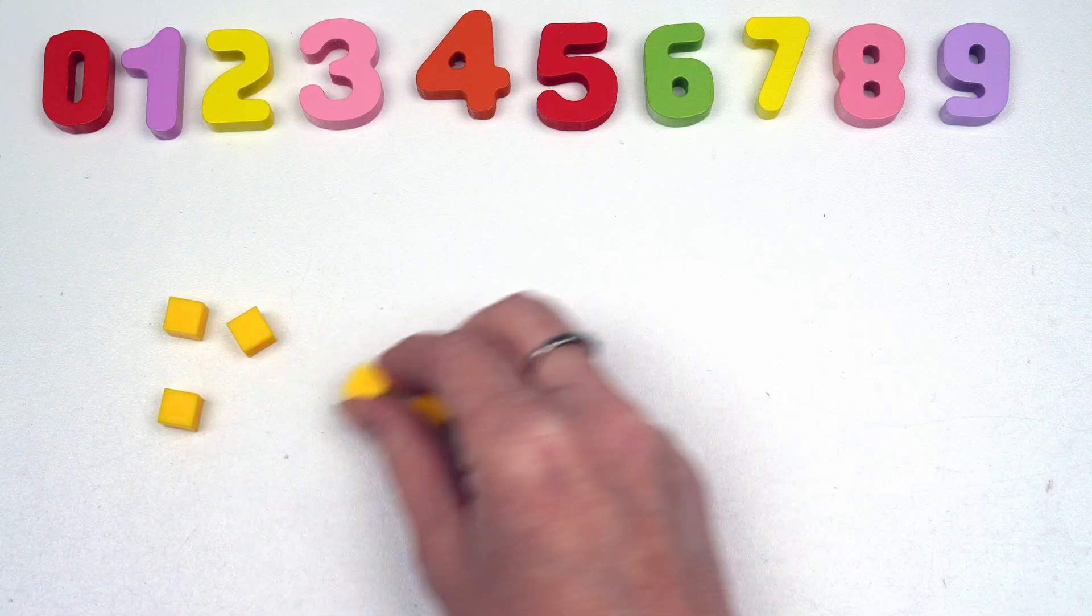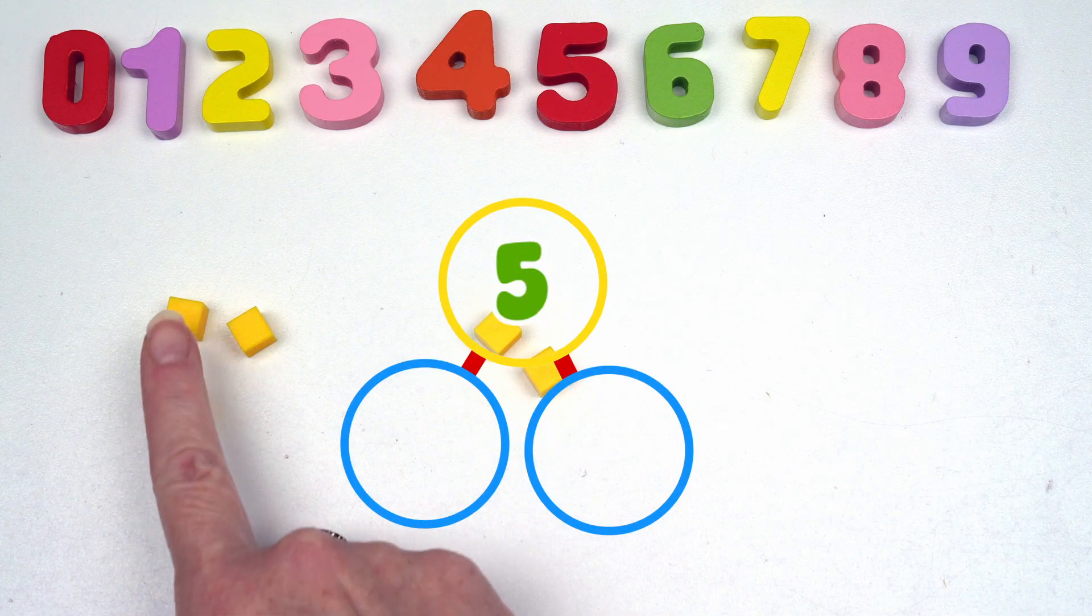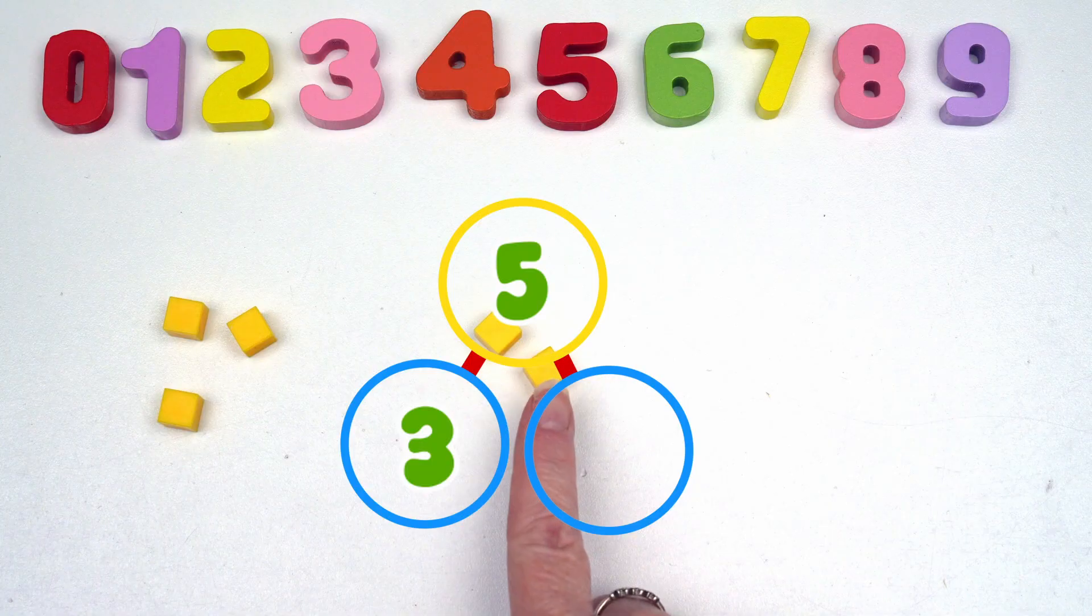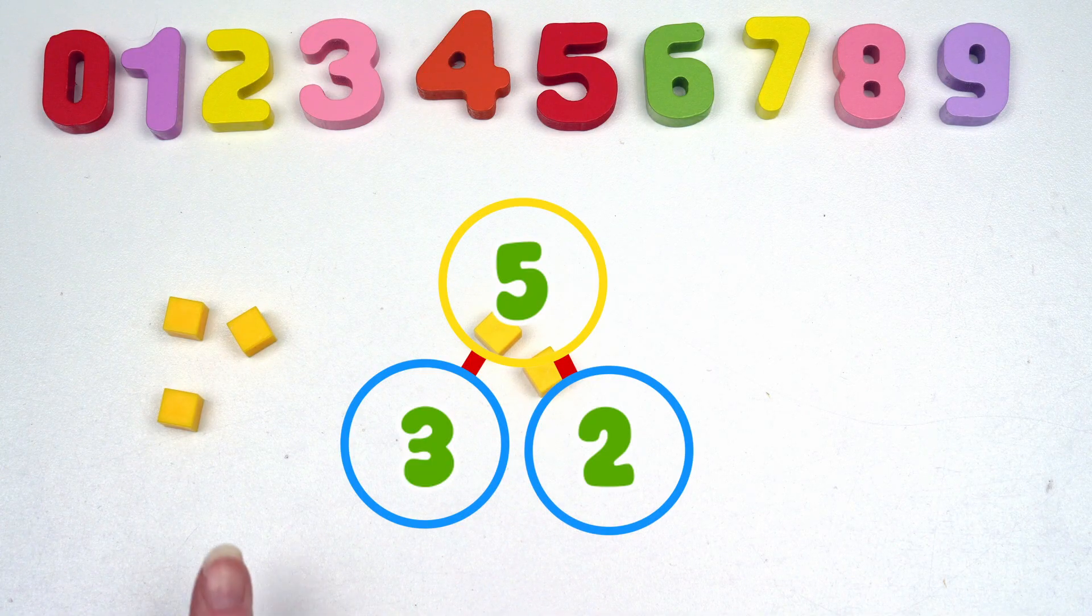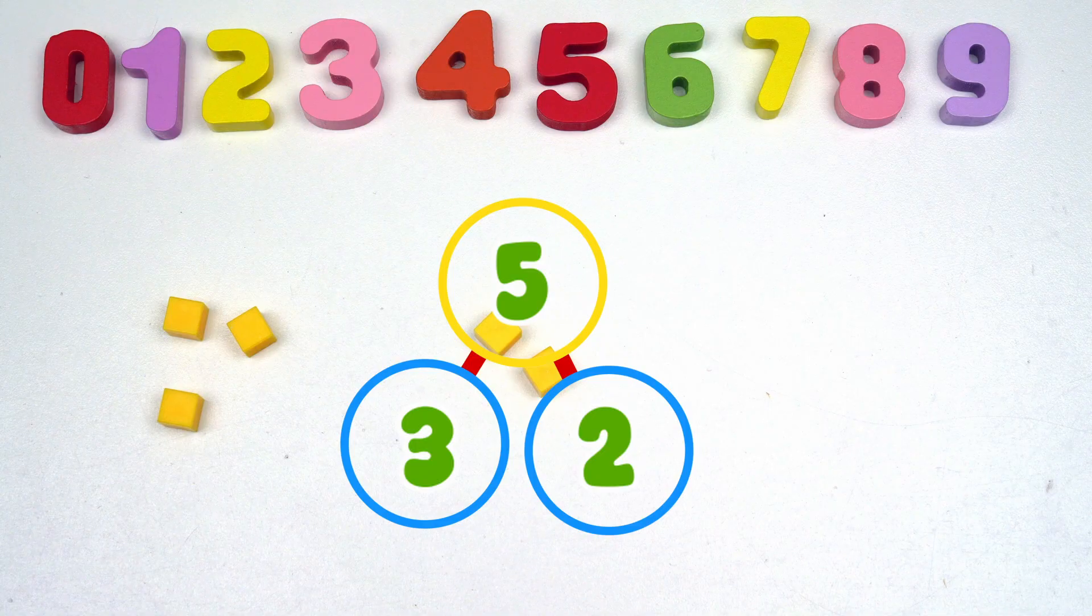We could also have one, two, three, four, five, like with the apples. So three and two would make a number bond for five.